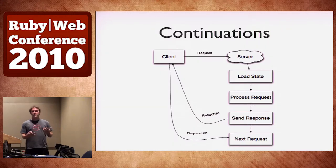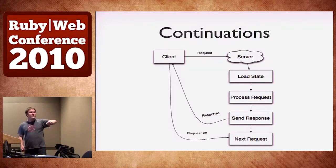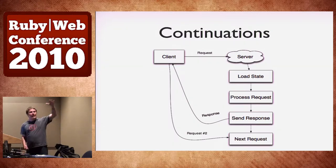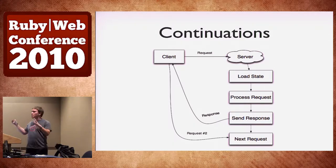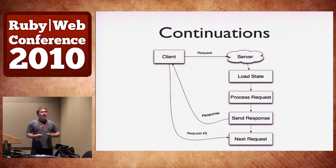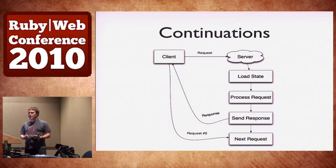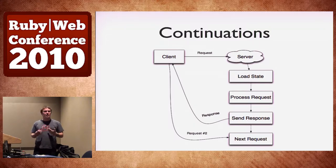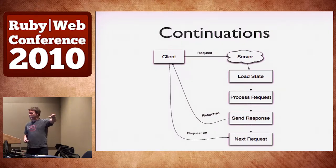When you use continuations, it works a little differently. It starts off the same way — client makes a request, server loads the state, processes the request, sends the response back. But now instead of ending the interaction, it basically sits there waiting. It says: after we've done this response, the next line of code would be this, or the next potential branches of code are these. It closes over the state, just like closures in Ruby. When the next request comes in, instead of starting at the top and fetching state from the database, it starts right where the previous action left off.